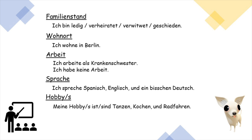Some people are also interested in what languages you speak. So you can say Ich spreche Spanisch, Englisch, und ein bisschen Deutsch. And for hobbies, you can say Meine Hobbys. If you only have one hobby, you can say Meine Hobby ist. And if you have a lot, like me, you can say Meine Hobbys sind.